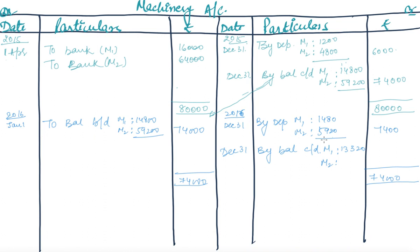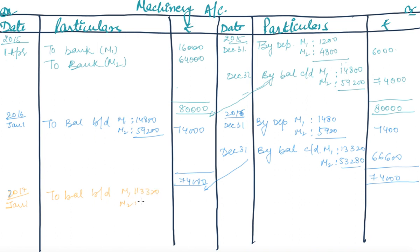Continuing the 2016 balances: M2 = 59,200 − 5,920 = rupees 53,280. Total closing balance is rupees 66,600. Both sides of the 2016 account total rupees 74,000. On 1st January 2017, Balance b/d is brought forward: M1 = rupees 13,320 and M2 = rupees 53,280, totalling rupees 66,600.